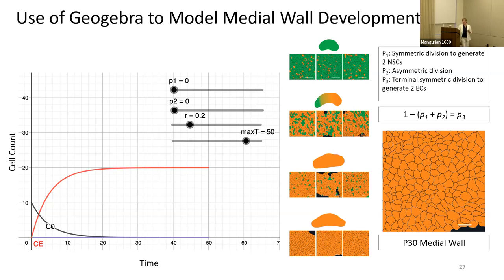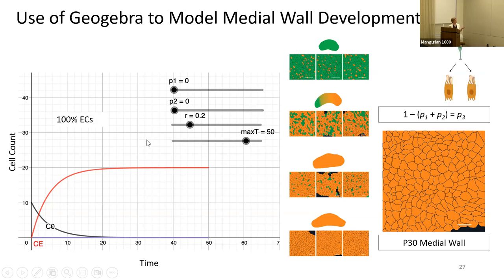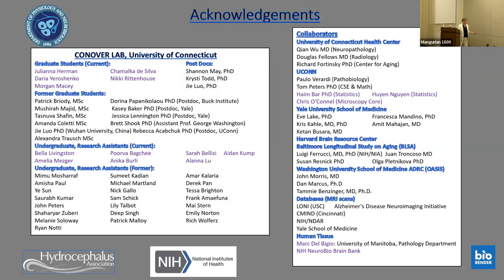Why are we doing this? One application is a hydrocephalic mouse model we've generated. Depending on when hydrocephalus sets in, we can apply the model to ask: do you use up your stem cell population too quickly? In that case, you're not able to generate all the ependymal cells needed to line the walls. That's one of the key applications of this predictive modeling approach.